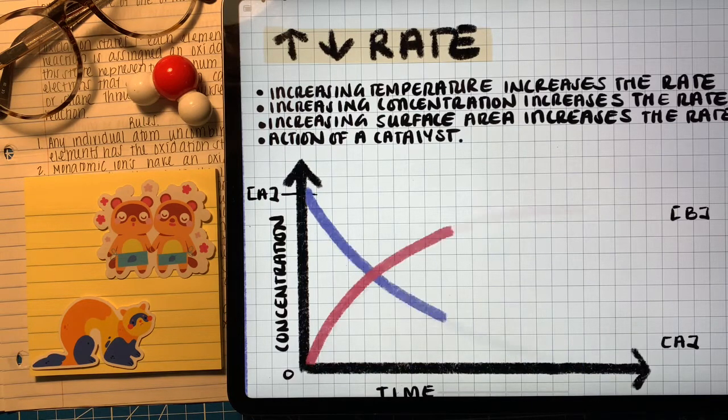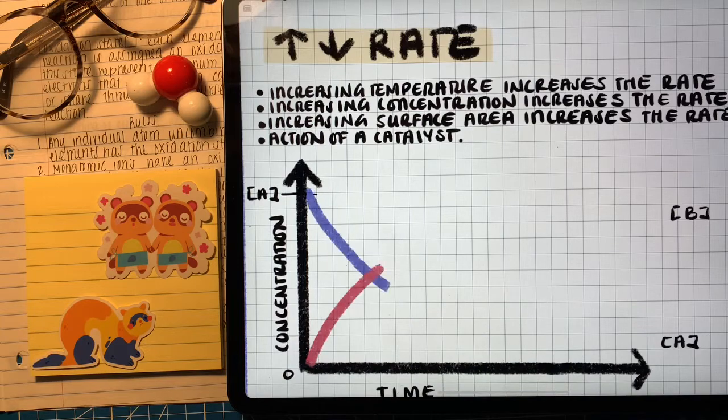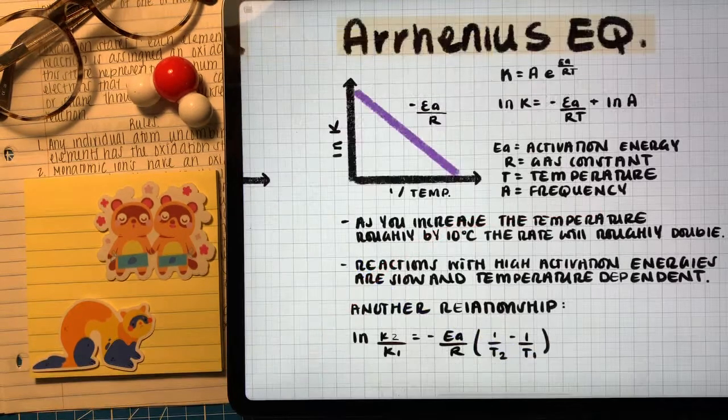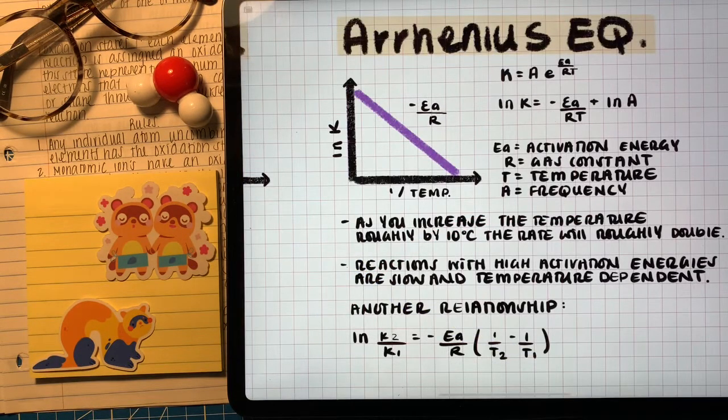Well the Arrhenius equation helps us build a perspective towards temperature. The Arrhenius equation helps us show that as we increase temperature we can increase the rate of the reaction. As you see here in this example as you increase the temperature roughly by 10 degrees celsius the rate would roughly double.